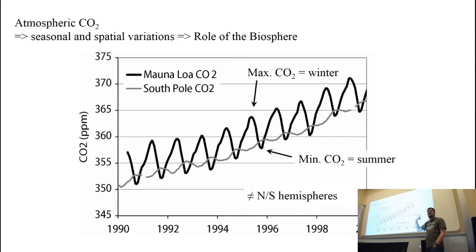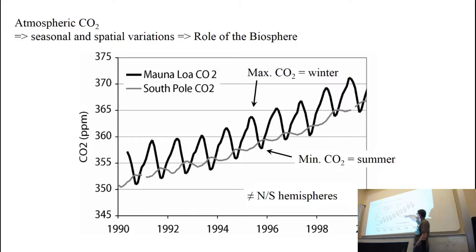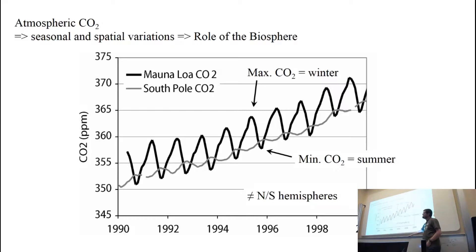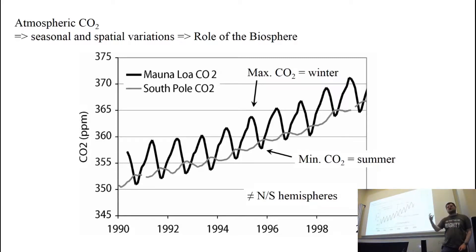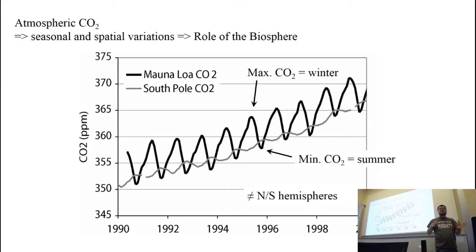Those of you who've done the ELE practical on Excel will be familiar with this sawtooth pattern in atmospheric CO2 — it's going up, it's going down, every year. There's an overall trend to higher concentrations, but each year there's this big change. The black line is a record from Hawaii, which is in the Northern Hemisphere, and the grey line is a record from the South Pole in the Southern Hemisphere. And you can see that they're antiphased — when the Northern Hemisphere is high, the Southern Hemisphere is low.